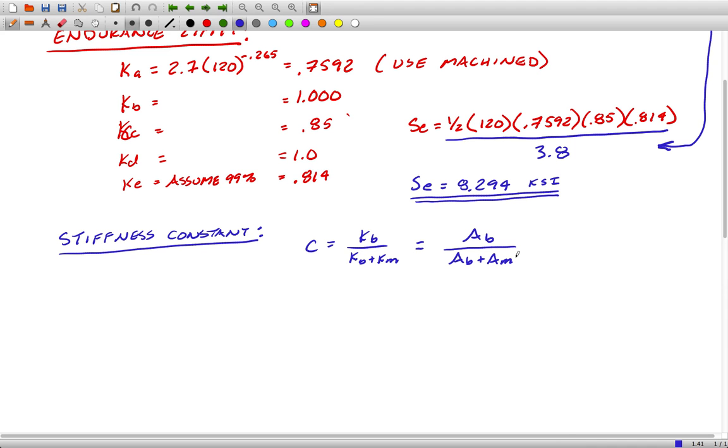But if the members being clamped and the bolt are made of the same materials, this is equivalent as saying the area of the bolt divided by the area of the bolt plus the area of the joint. And this is just a different way of going about it.